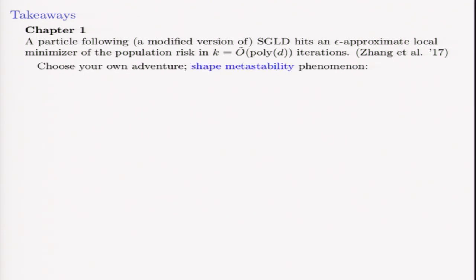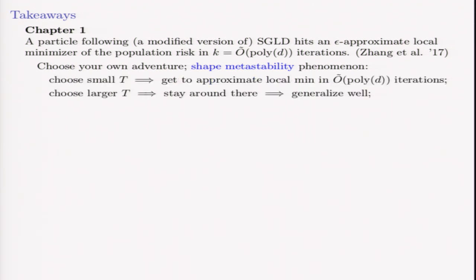To recap, we've talked about Langevin for non-convex functions, and we can show that via your choice of a continuous time horizon T, you can shape the metastability phenomenon that you want to see. Short one, you will reach a local min quickly. Longer one, you will be staying around there, and if you stop then, you will generalize well.